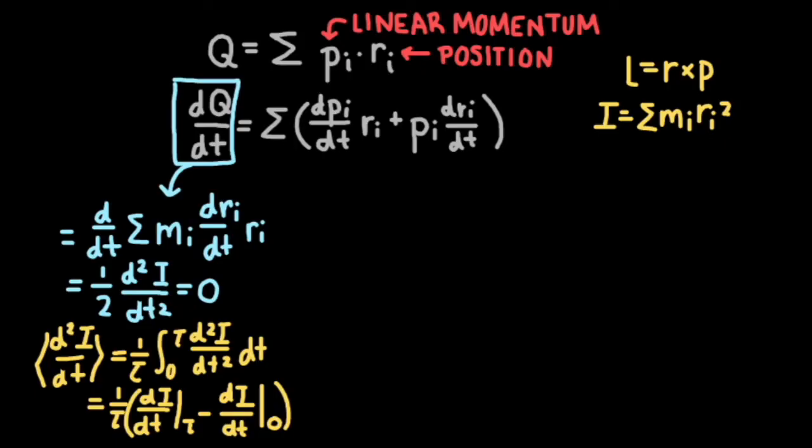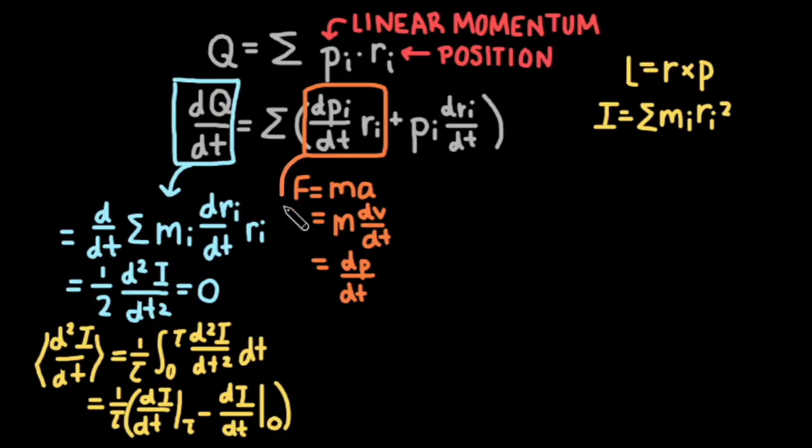Next, let's look at the right-hand side of our equation. According to Newton's second law, force is equal to mass times acceleration. In other words, force is equal to mass times dv dt, where mv just equals the linear momentum. So we can rewrite the first term on the right-hand side as the sum of f times r.